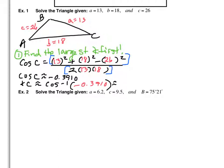The result is 113.02 degrees — round to two decimal places. So that's answer one. We want to update our picture. Obviously we drew our triangle wrong, but we're not going to let that bother us.